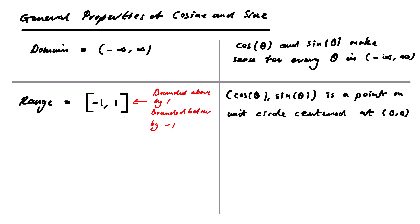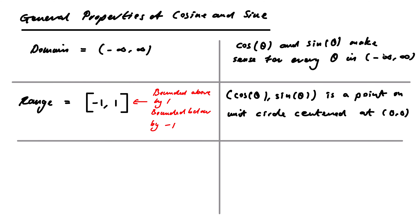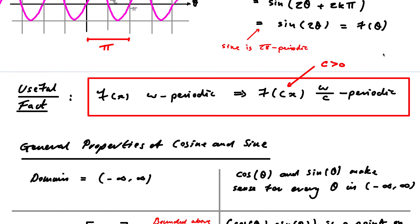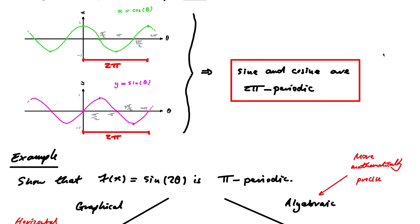Next, increasing or decreasing. This is a lot more delicate. Of course, neither is overall increasing or decreasing — certainly not on the whole domain. But if we restrict to certain intervals, they will be. So let's take the graph for cosine and think about where it works.